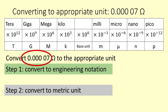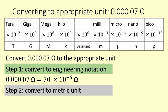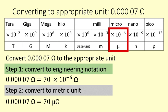0.0007 ohms. As engineering notation this is 70 times 10 to the negative 6. 10 to the negative 6 corresponds to micro, so this is 70 micro-ohms.